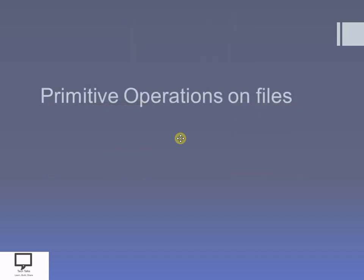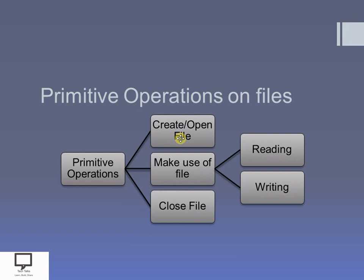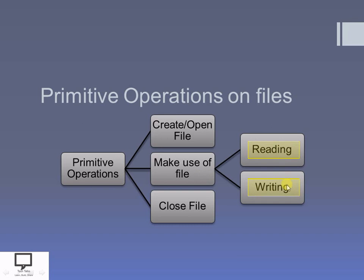Now let's start with the primitive operations. These are the different primitive operations we can perform on a file. In short, opening a file, or if the file does not exist then creation of file. After creation or opening a file, we will make use of that file by performing reading and writing operations. And after the task we want to perform is finished, we will close the file. These are the different primitive operations we can perform on a file.